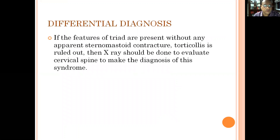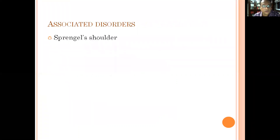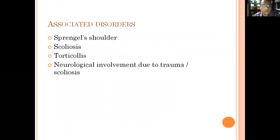It should be differentiated commonly from torticollis. Absence of any apparent sternocleidomastoid contracture rules out torticollis, and X-ray will also help in differentiating torticollis from Klippel-Feil syndrome. Other differential diagnoses are congenital scoliosis, acquired spinal fusion caused due to infection or inflammatory disorders, certain syndromes, and Sprengel's deformity. Note that some of these differential diagnoses may co-exist with Klippel-Feil syndrome.